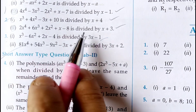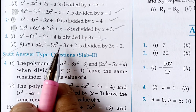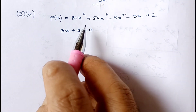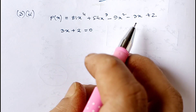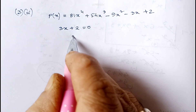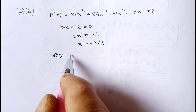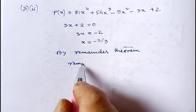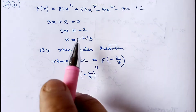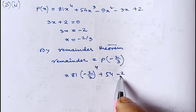I hope that sum is clear. Now let me show the second part of question number two. Here the polynomial is 81x⁴ + 54x³ - 9x² - 3x + 2, and we have to divide it by 3x + 2. Setting 3x + 2 = 0 gives x = -2/3. By applying the remainder theorem, the remainder will be p(-2/3).